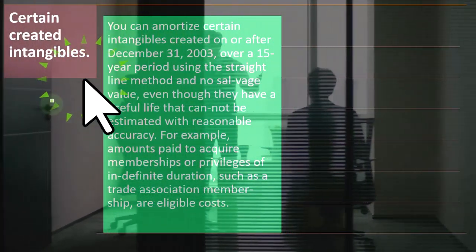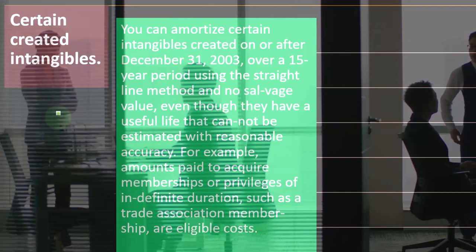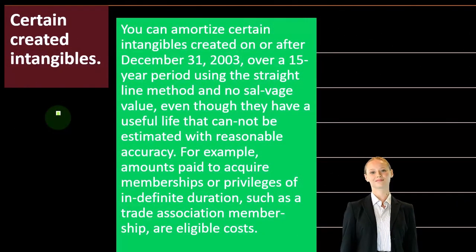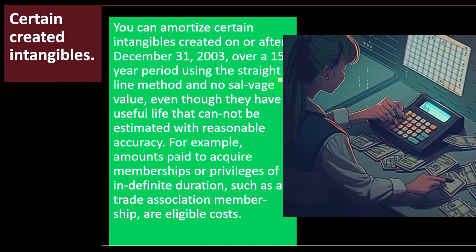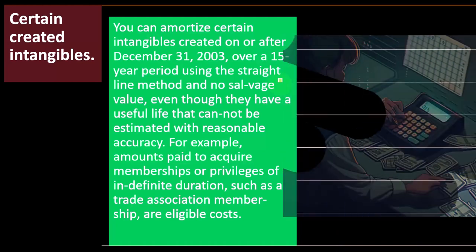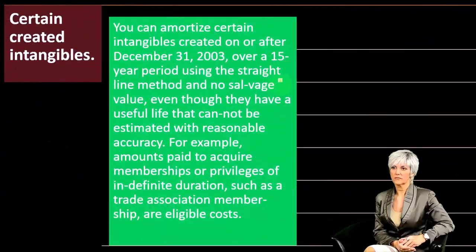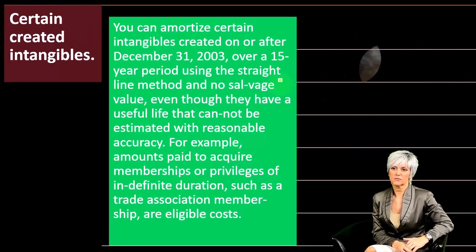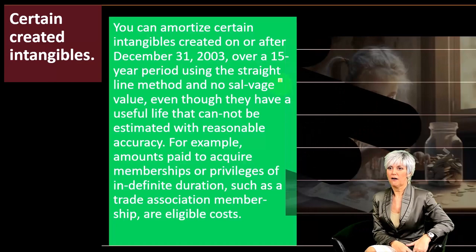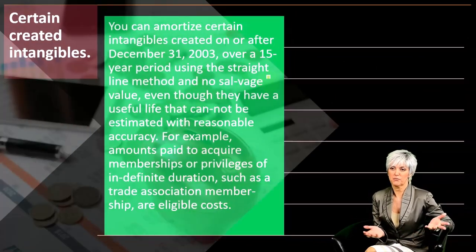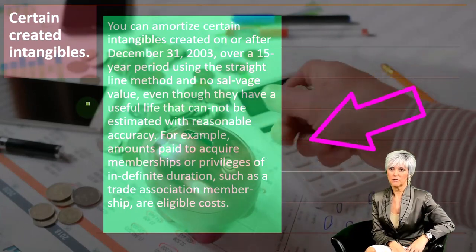Certain created intangibles can be amortized if created on or before December 31, 2003, over a 15-year period using the straight line method with no salvage value. The straight line method is the standard method; salvage value is considered to be the value at the end of the depreciation period. For example, a forklift at the end of a five-year life still has a salvage value from scrapping. However, in this case we use no salvage value, even though the asset has a useful life that cannot be estimated with reasonable accuracy.